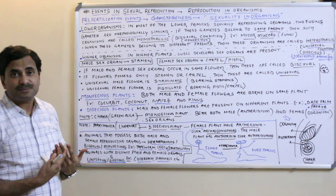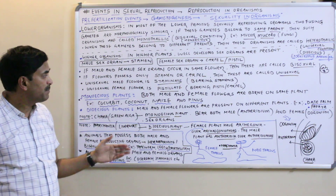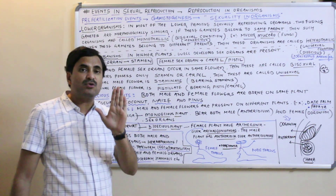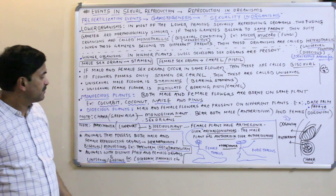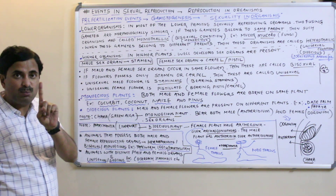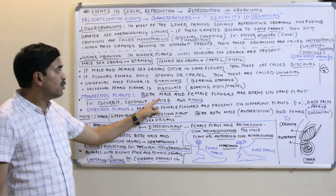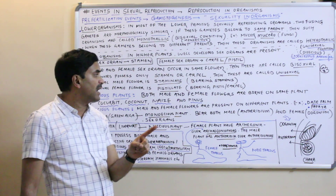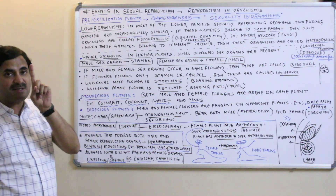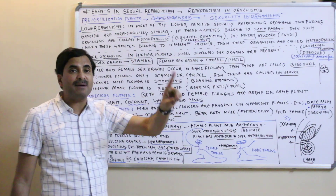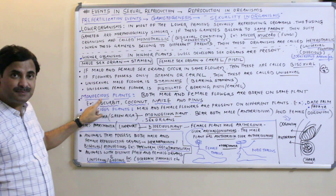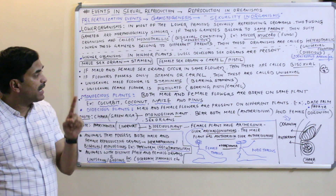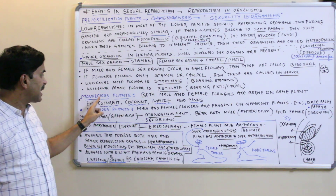The terms monoecious and dioecious are asked at least 10 to 12 times in NEET. Mono means one — same. When both male and female flowers are born on the same plant, the plant is called monoecious. Examples are cucurbits, coconut, maize, and Pinus — all are monoecious plants.